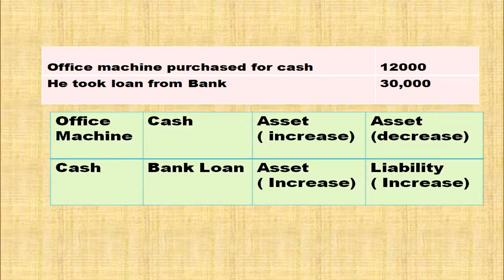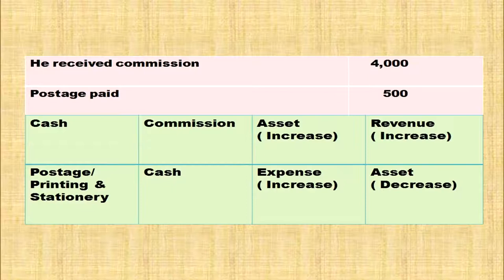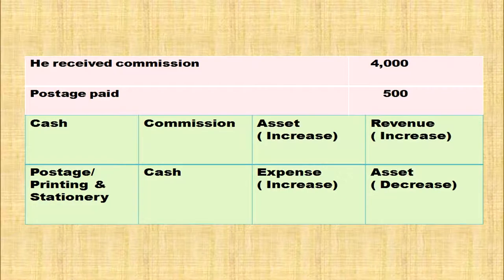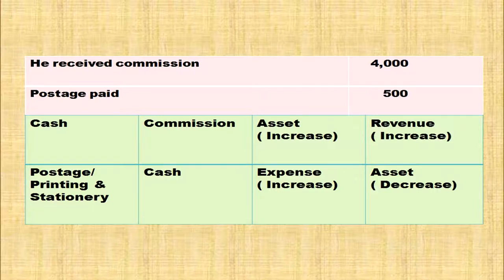Received commission. Cash is coming inside the business in the form of commission. Affected accounts: cash and commission. Cash is an asset — asset is increasing, so it is debited. Commission is a revenue for the business — rule for revenue: when increased, it is credited; when decreased, it is debited. Commission account is increased, so it is credited. Cash account debit; commission account credit.